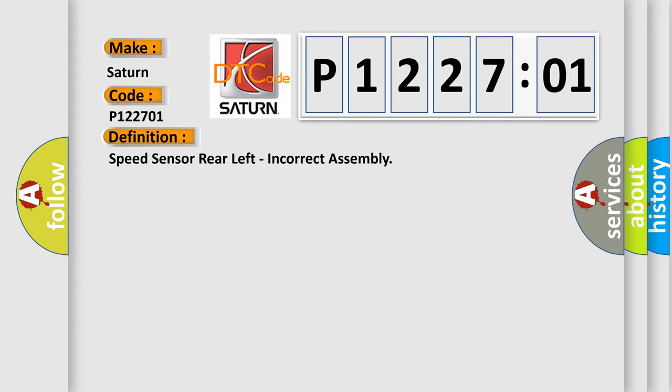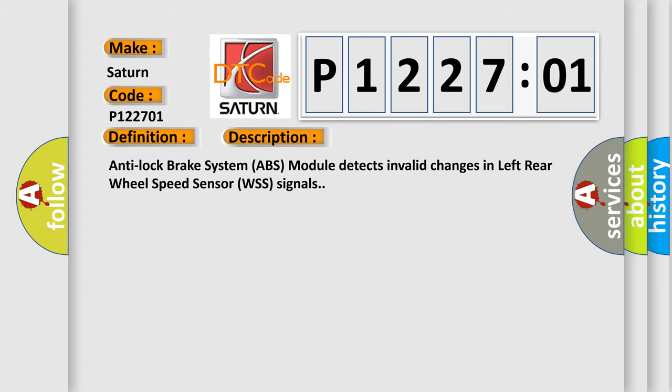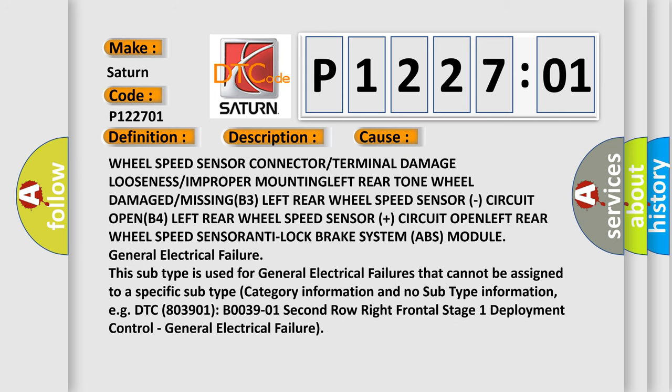And now this is a short description of this DTC code. Anti-lock brake system ABS module detects invalid changes in left rear wheel speed sensor WSS signals. This diagnostic error occurs most often in these cases: wheel speed sensor connector or terminal damage, looseness or improper mounting, left rear tone wheel damaged or missing, left rear wheel speed sensor.